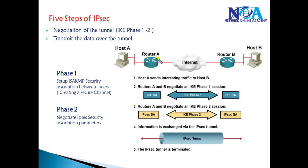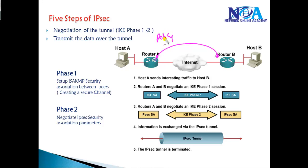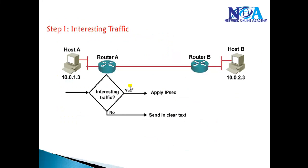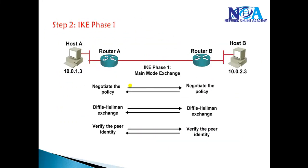Phase 1 is responsible for creating a secure channel between the two VPN endpoints. We need to create a policy here — we call it the ISAKMP policy (Internet Security Association Key Management Protocol policy). That particular policy is going to define the authentication and encryption algorithms to be used, and also defines the hashing function used to control traffic between the two VPN endpoints.